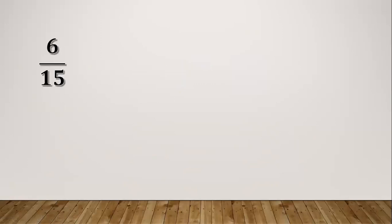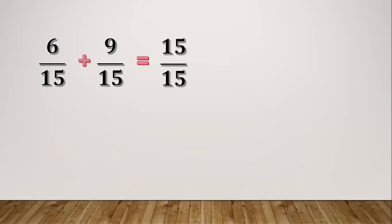Another example: six fifteenths plus nine fifteenths. Same process — six plus nine equals fifteen. Copy the denominator which is fifteen, so fifteen over fifteen. Fifteen divided by fifteen equals one, so our final answer is one.